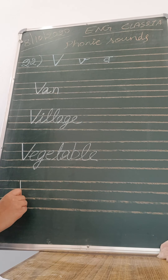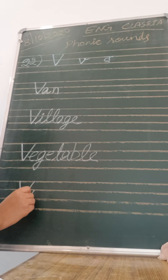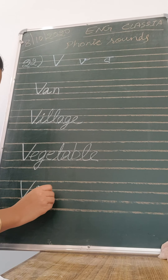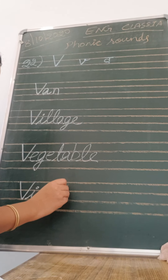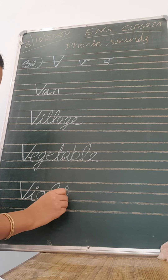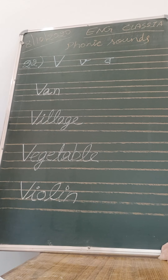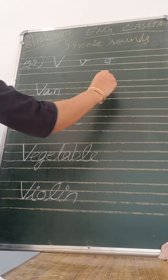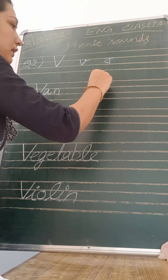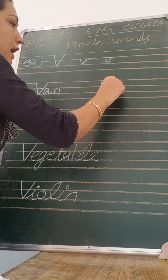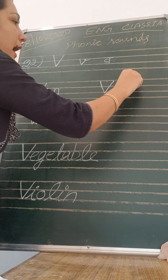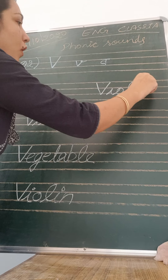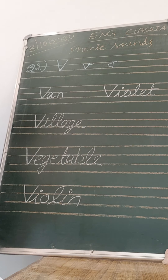V is for violin. It's a musical instrument that we can play. V-I-O-L-I-N — violin. V is for violet — violet color. V-I-O-L-E-T — violet. V is for violet.